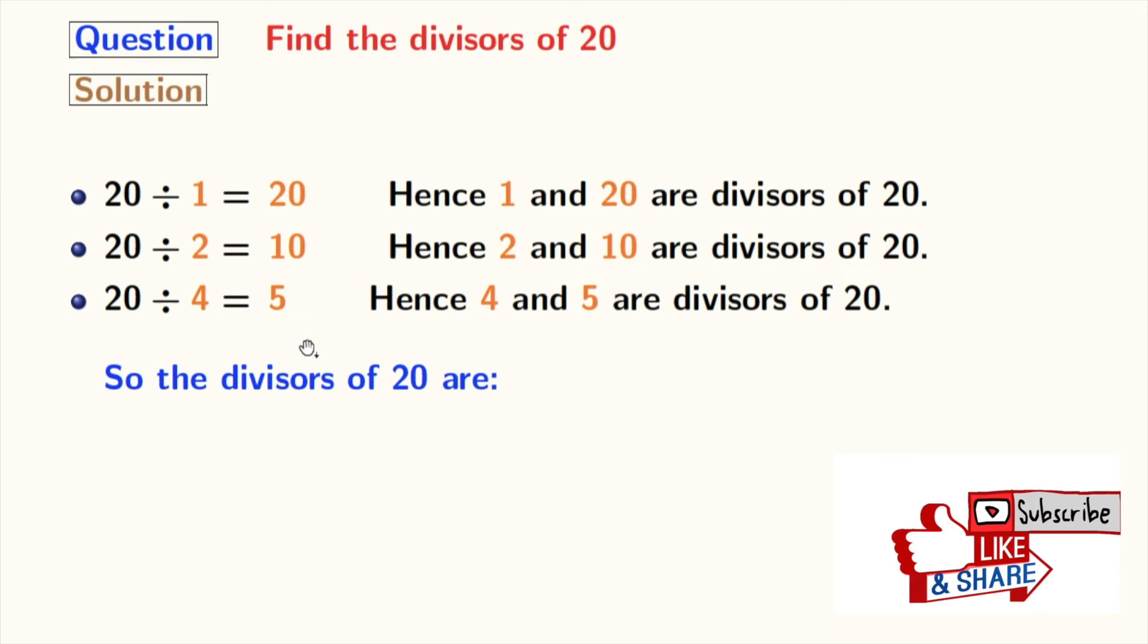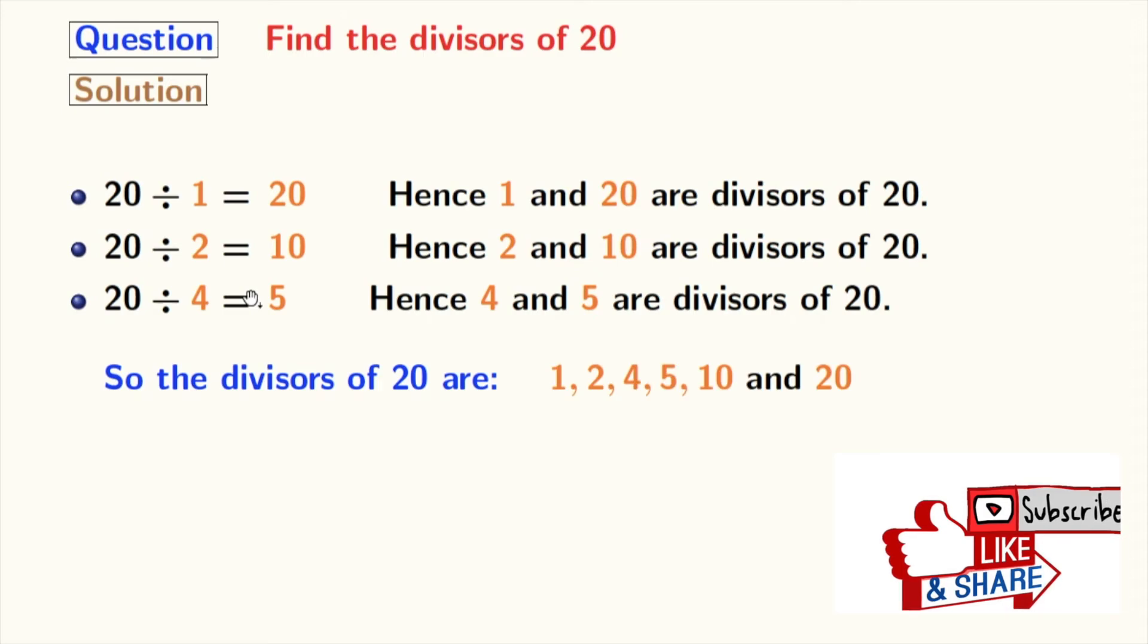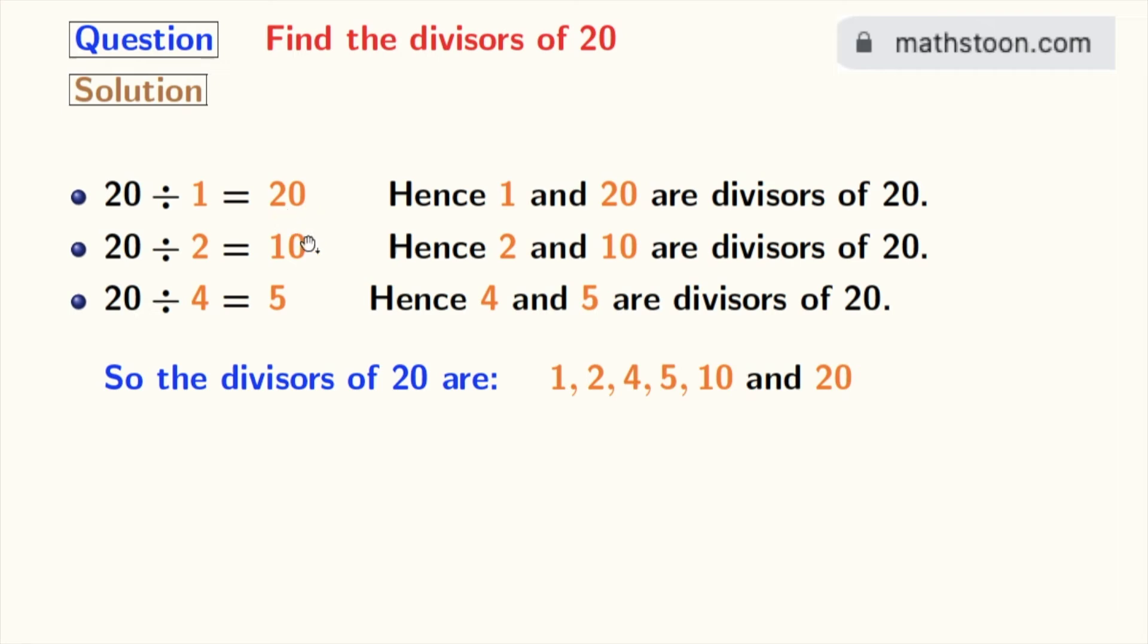Now we have all the divisors of 20, which are in orange colors. That is 1, 2, 4, 5, 10, and 20. These are the divisors of 20.